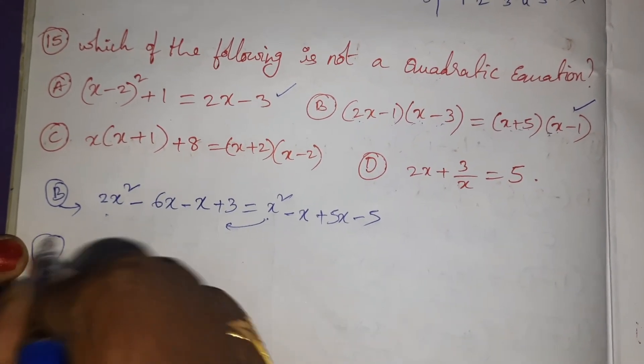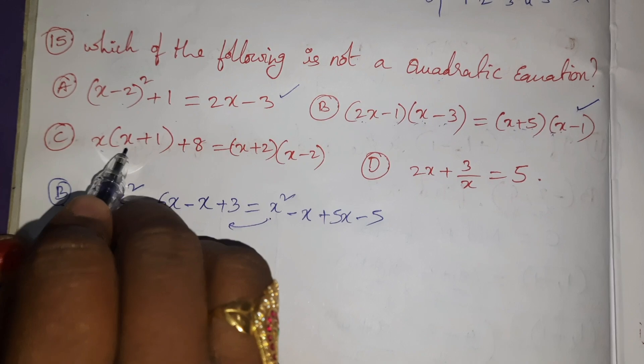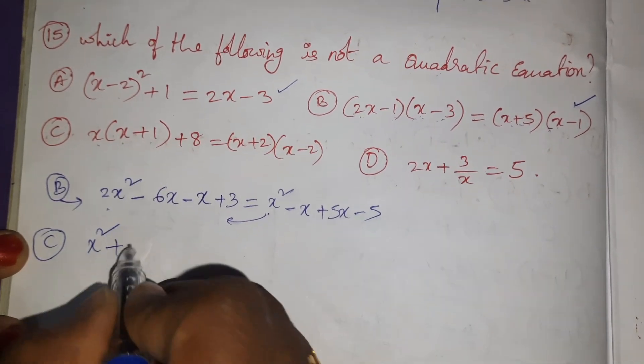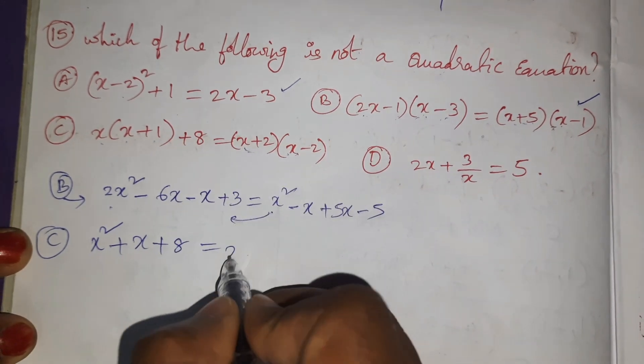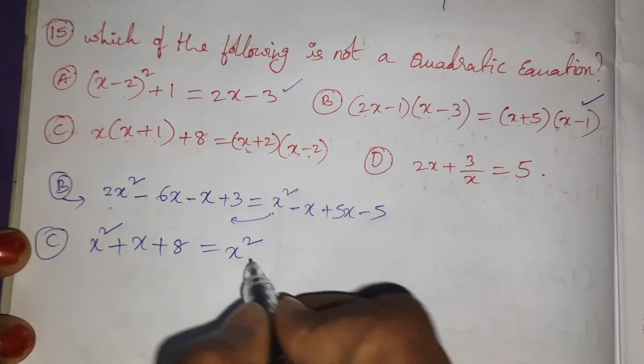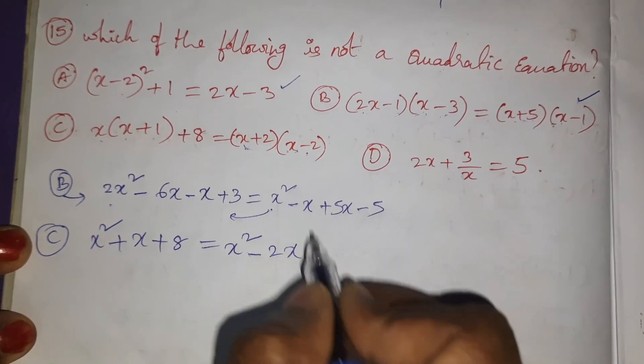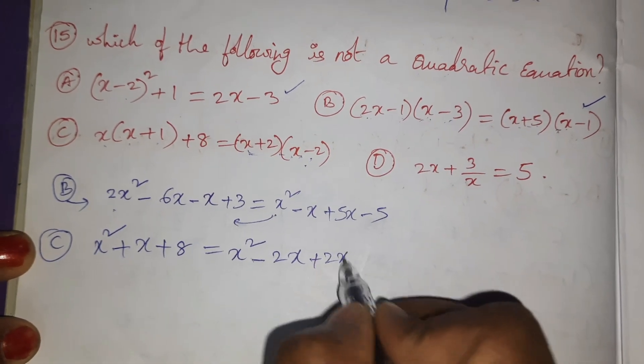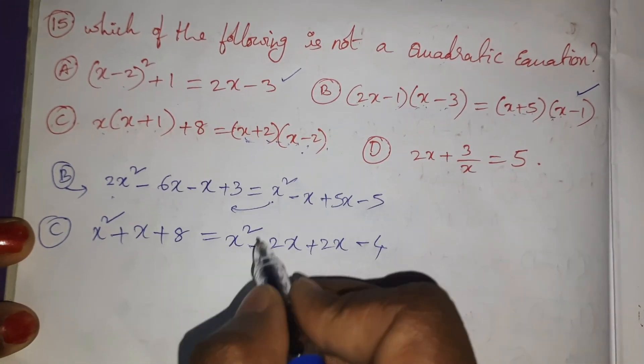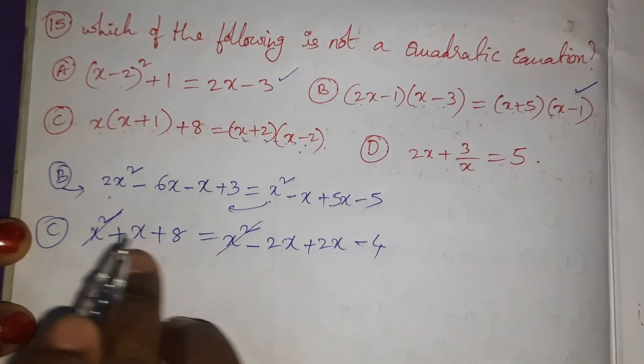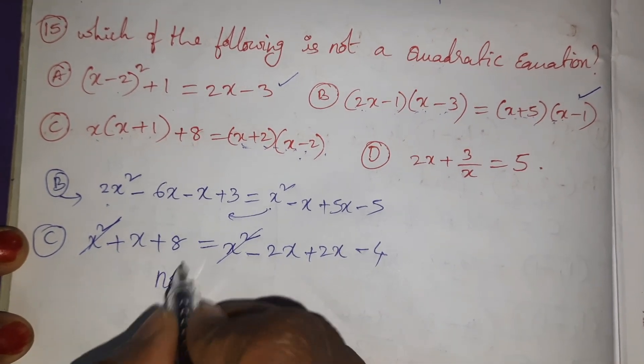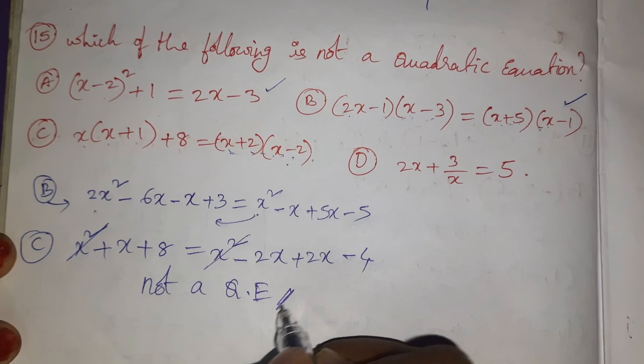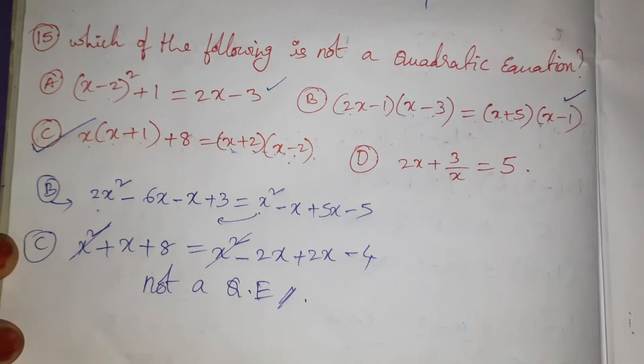So it is also quadratic equation. Coming to the C bit: x(x + 1) after simplification, x × x is x² - 2x + 2x - 4. So left and right x² gets cancelled. Here there is no any quadratic form, so it is not a quadratic equation. So answer C.